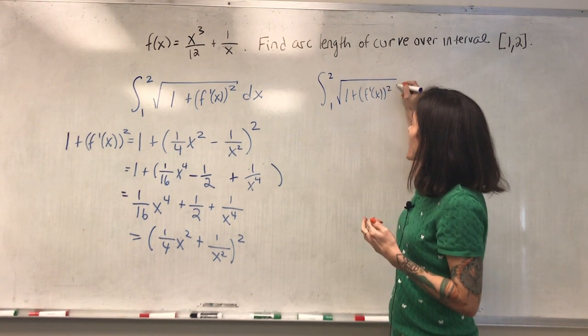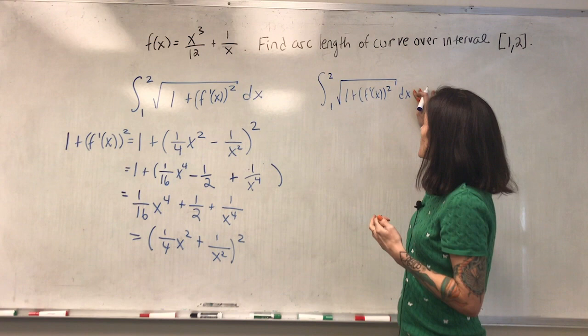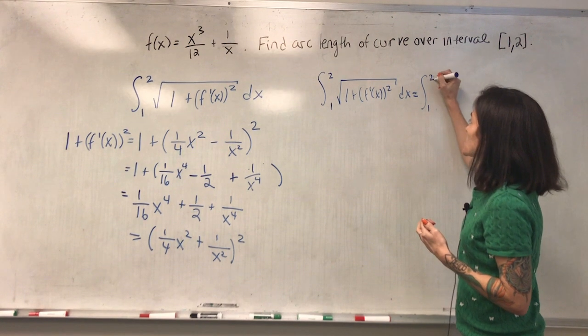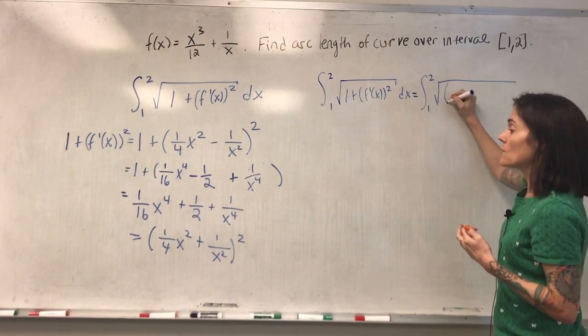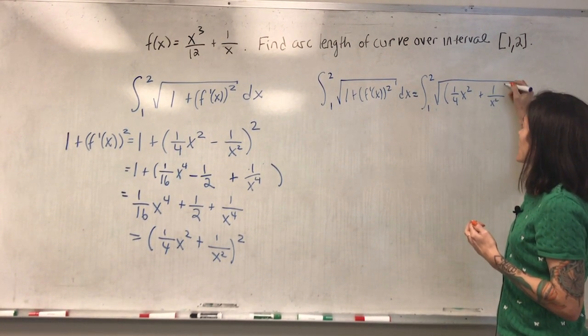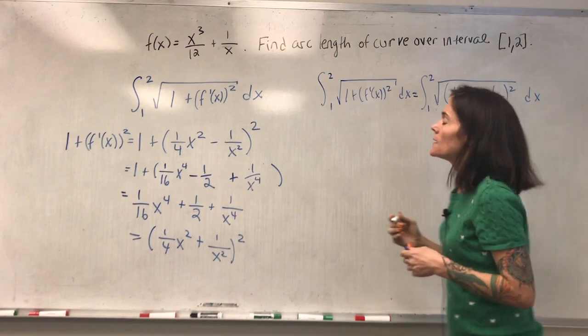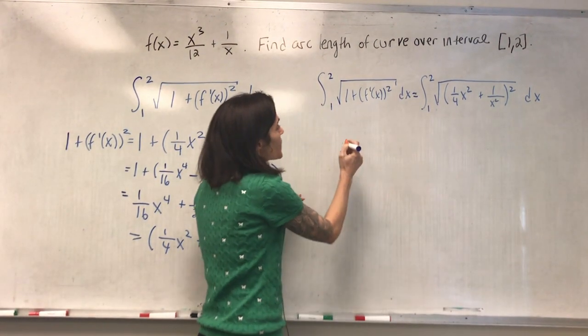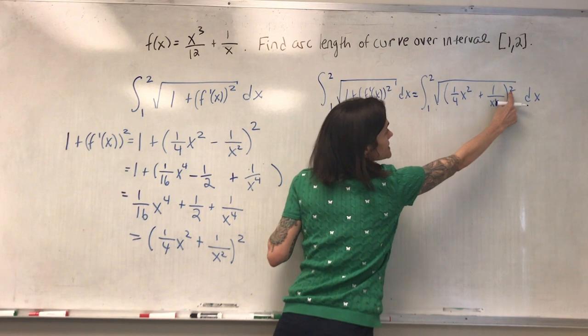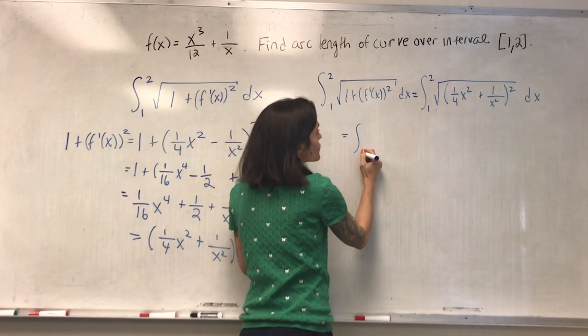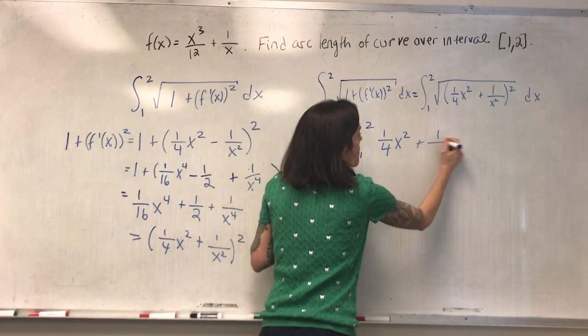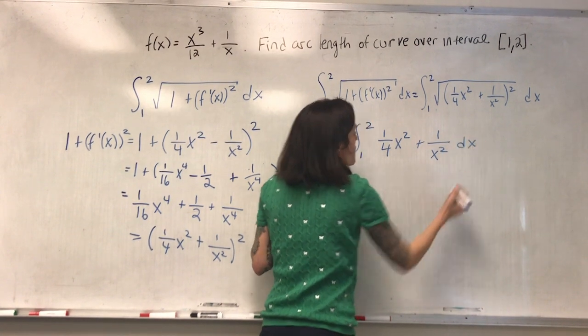The square root one plus the derivative squared dx. I've already simplified one plus the derivative squared. This is one to two, the square root of one over four x squared, plus one over x squared, squared, dx. And we can then, what's underneath the square root is always, or I should say inside of the squared, is always non-negative. So the square root will just be this.